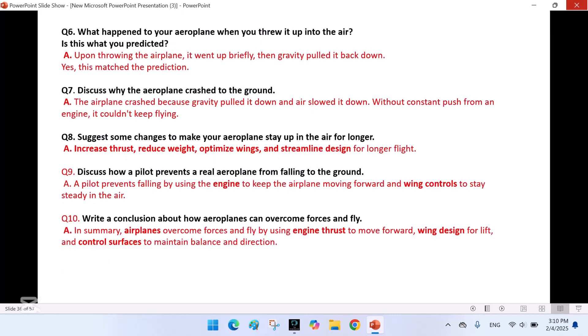What happened to your aeroplane when you threw it up into the air? Is this what you predicted? Upon throwing the aeroplane, it went up briefly, then gravity pulled it back down. Yes, this matched the prediction. Discuss why the aeroplane crashed to the ground. The aeroplane crashed because gravity pulled it down and air slowed it down. Without constant push from an engine, it couldn't keep flying. Suggest some changes to make your aeroplane stay up in the air for longer. Increase thrust, reduce weight, optimize wings, and streamline design for longer flight.